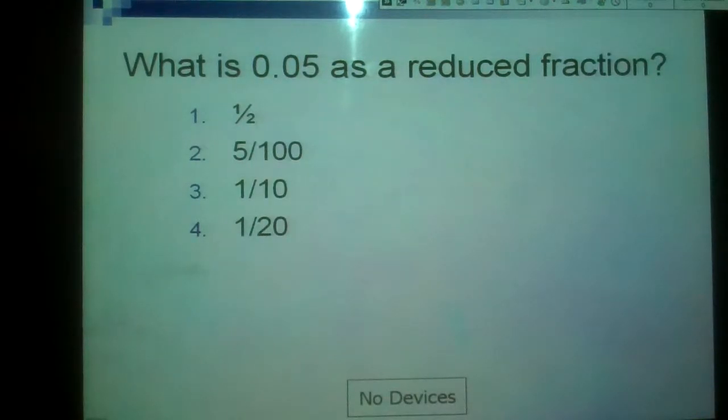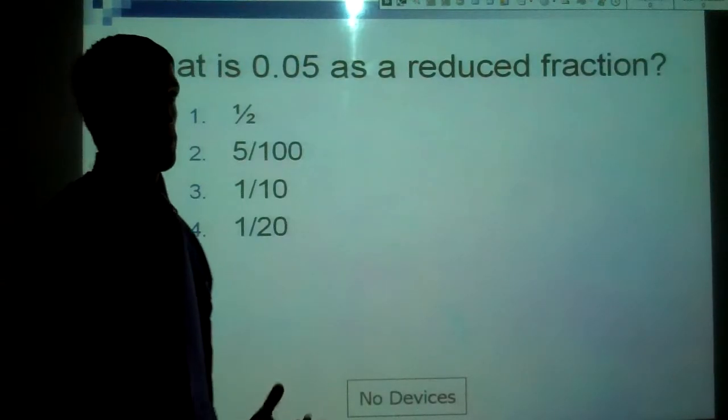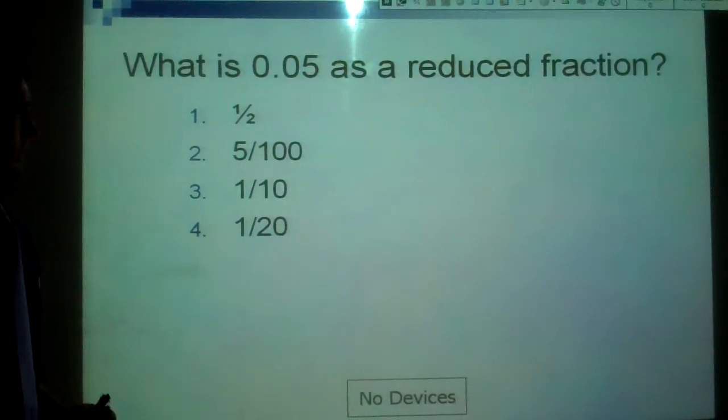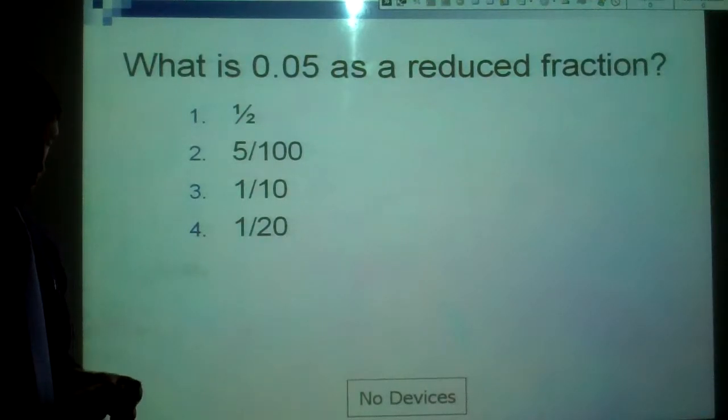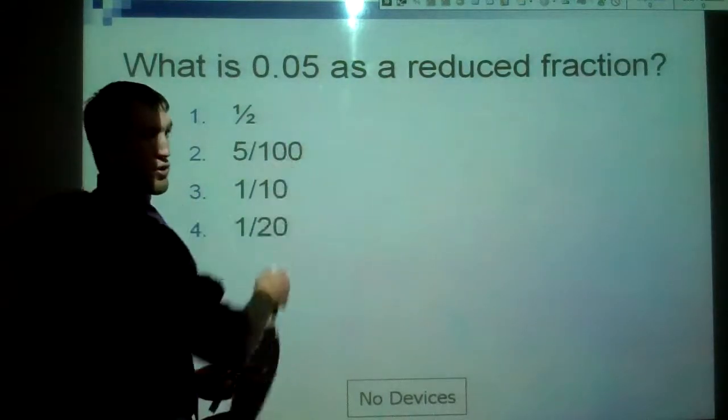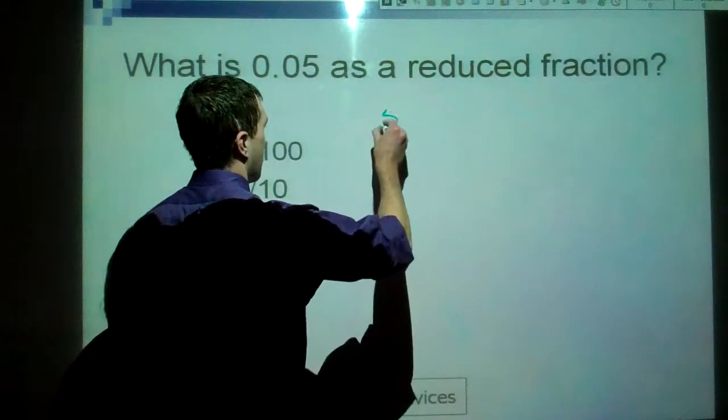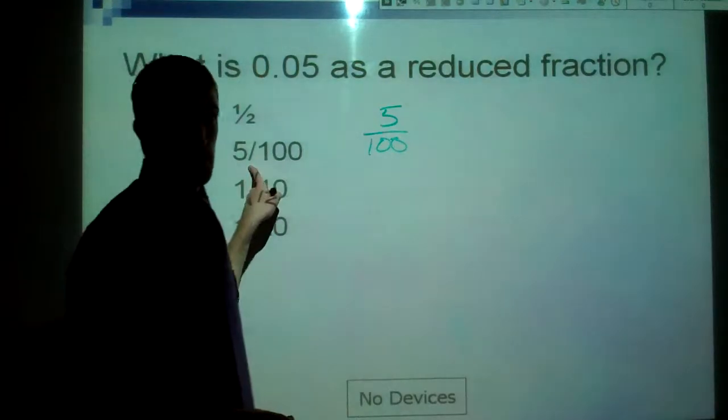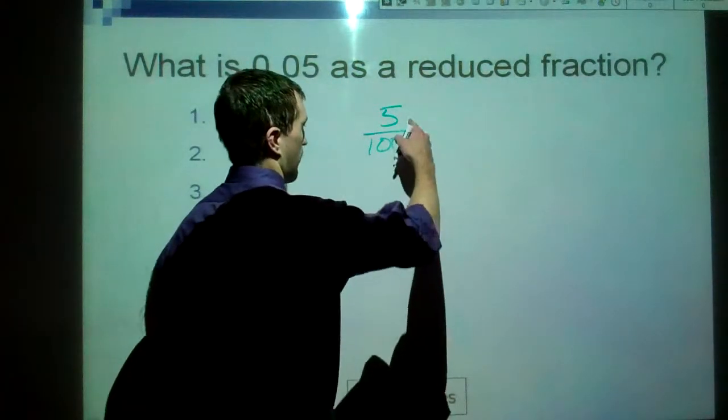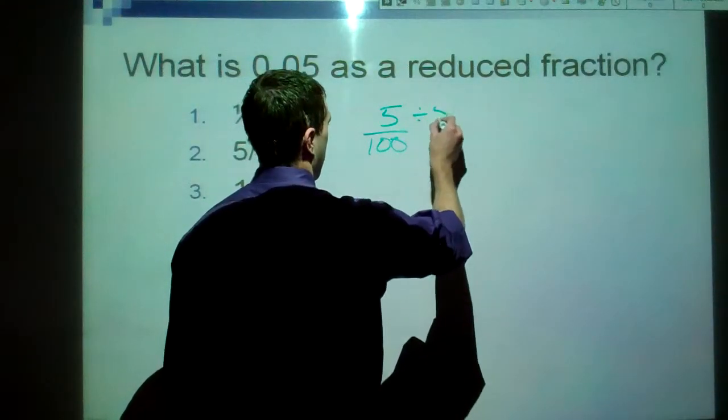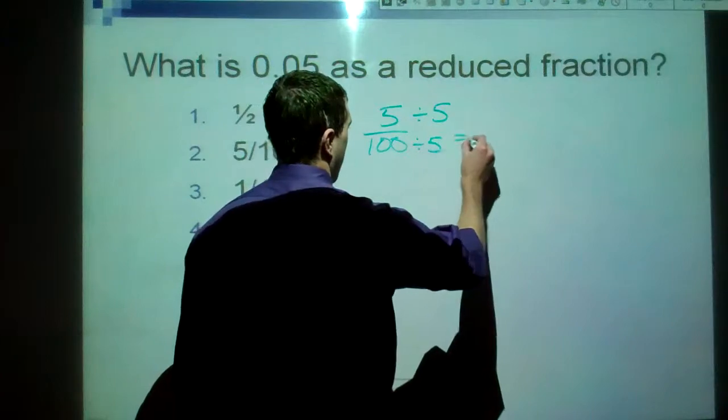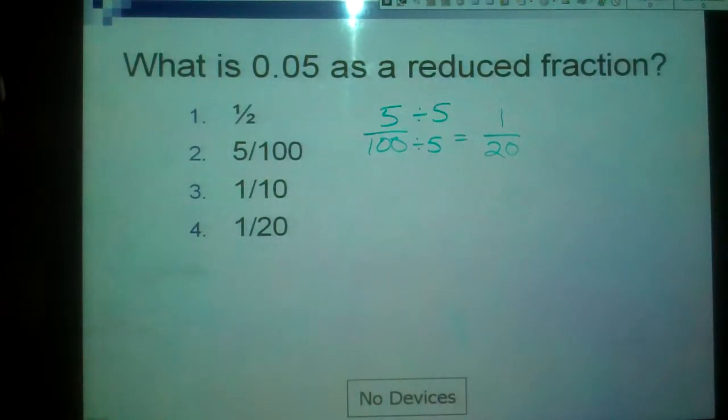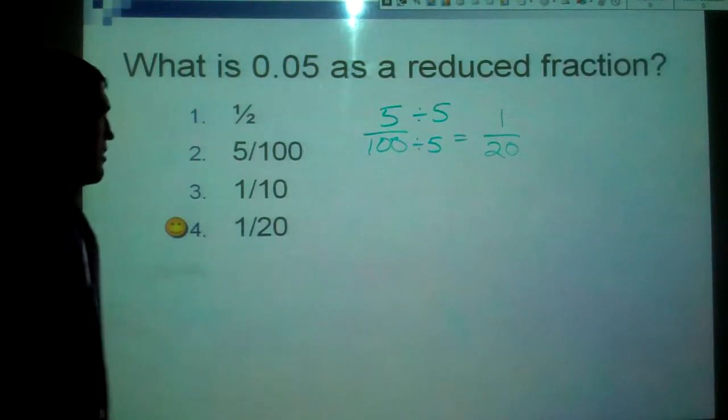Now, what is zero point zero five as a reduced fraction? And I did say zero point zero five, the unofficial way to say it. Saves some time, but this is actually five one hundredths. And, since we call it five one hundredths, that tells us how to set this up. We've got five in the hundredths place, so we go five over a hundred. So, actually, number two is a correct answer, but there's one that's more correct, because I asked for it in reduced form. So, I know that five goes into a hundred, so I'm going to divide by five. And we get one. Hundred divided by five is twenty. Should be at one over twenty. Our little smiley guy should go to number four. That's how we do that one.